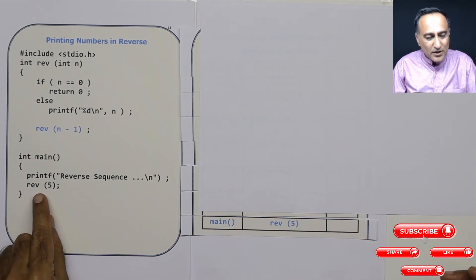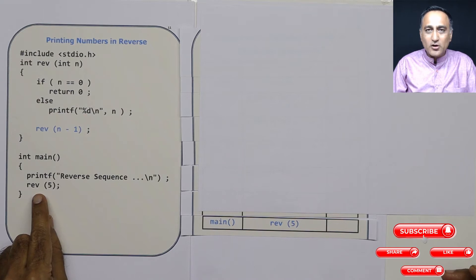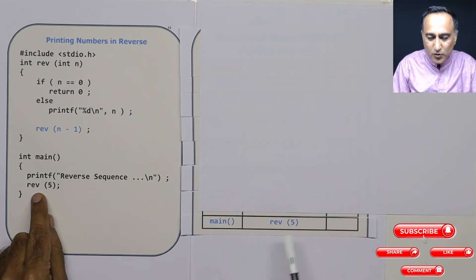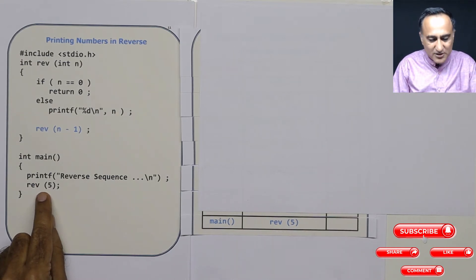So let us say I'm calling main. Main is called or invoked by the operating system and main is calling reverse of 5. So this is how on the stack frame main will get loaded and it's made a call to reverse 5.